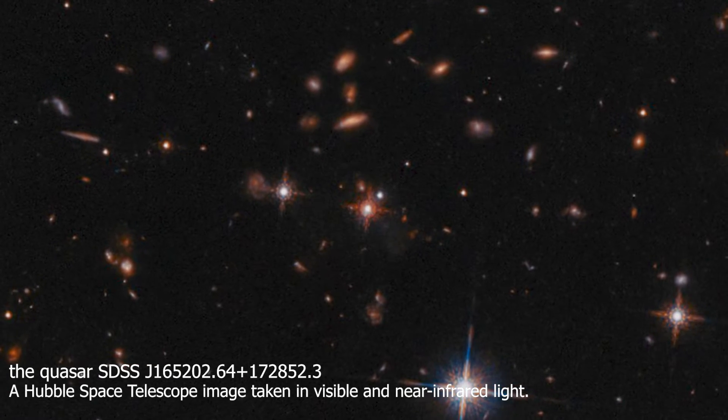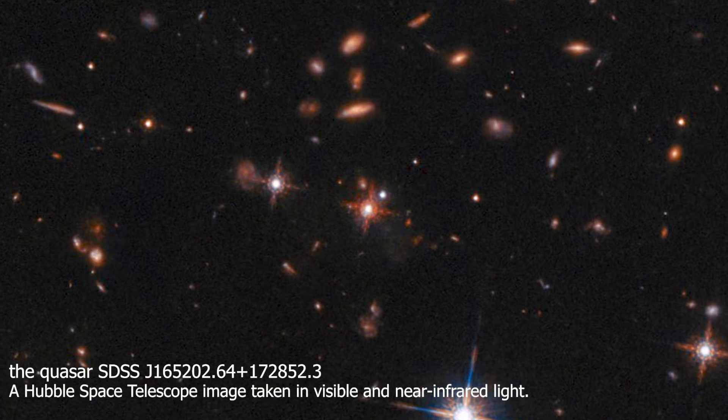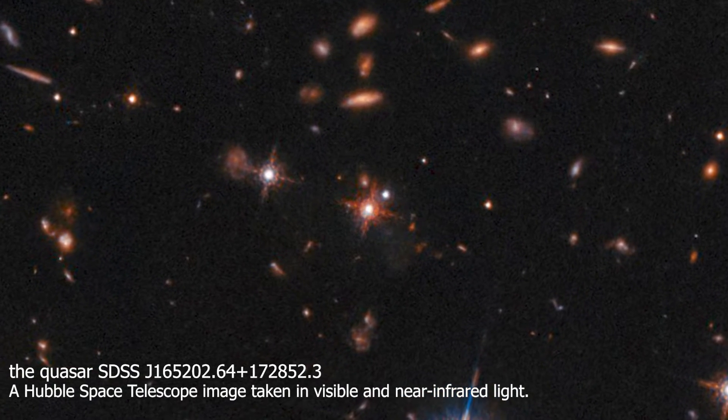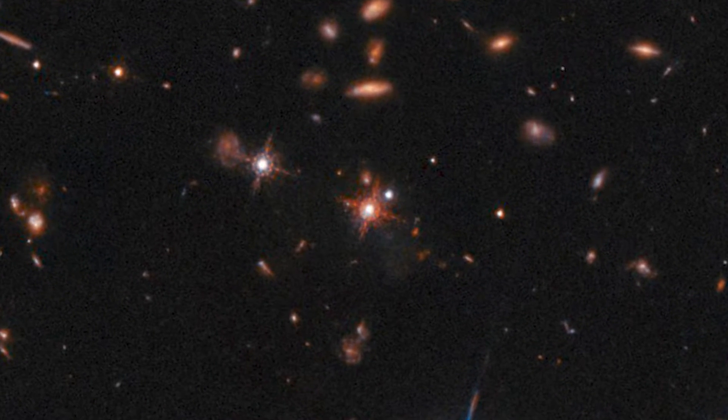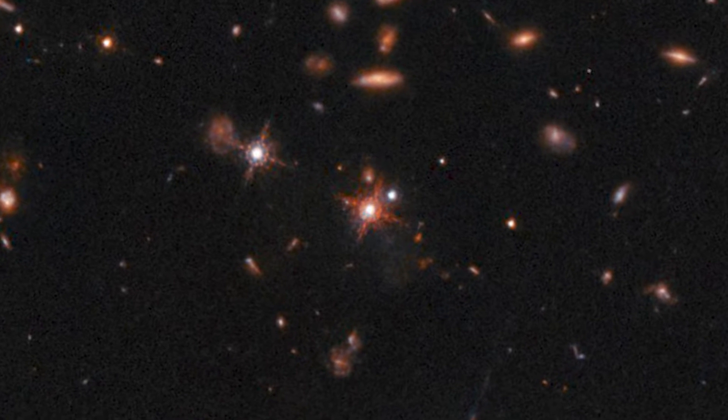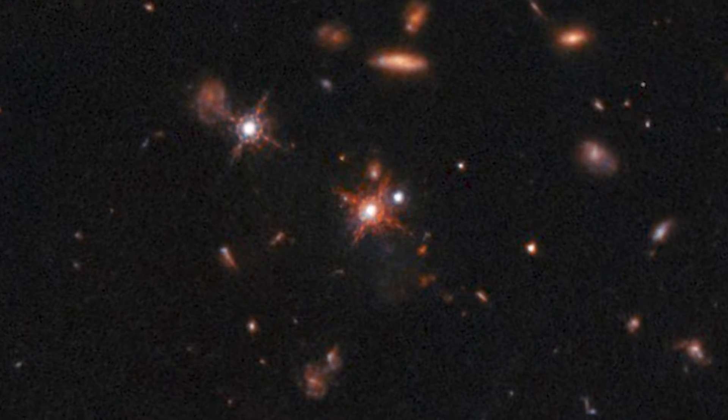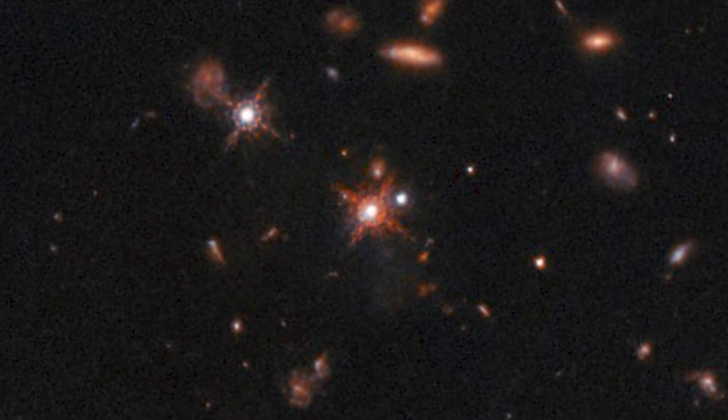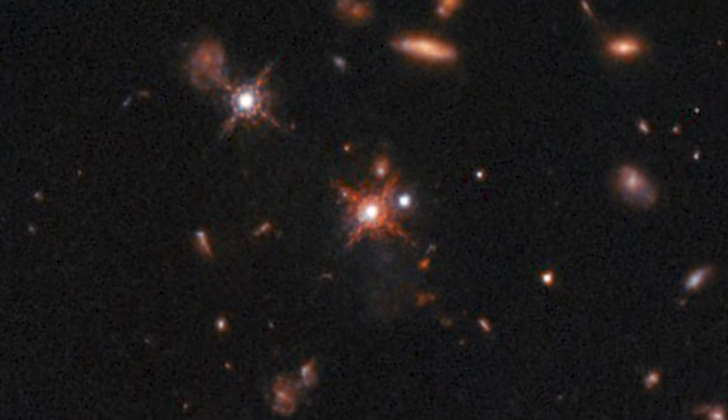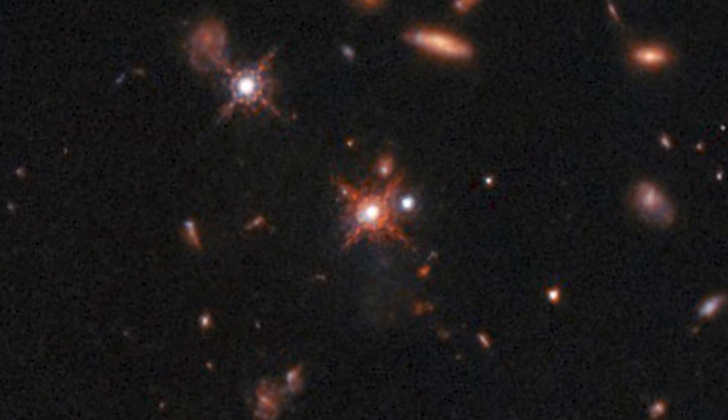Using NASA's James Webb Space Telescope, astronomers have discovered a shocking finding about the early universe: a cluster of huge galaxies in the process of formation around an incredibly hot quasar. The findings will deepen our understanding of the conditions that led to the formation of the present-day cosmic web from clusters of galaxies in the early universe.